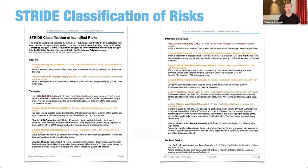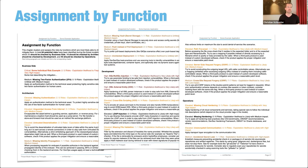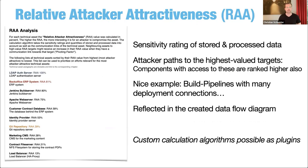If you're into classic STRIDE modeling, here you have a grouping of the same identified risks to their respective STRIDE categories, and you can click on each title to jump directly to that risk chapter — the PDF is fully linked. Similarly there's an assignment by function: what group should take care of that mitigation step — is it something to be addressed by the business side, architecture level, development, or operations?